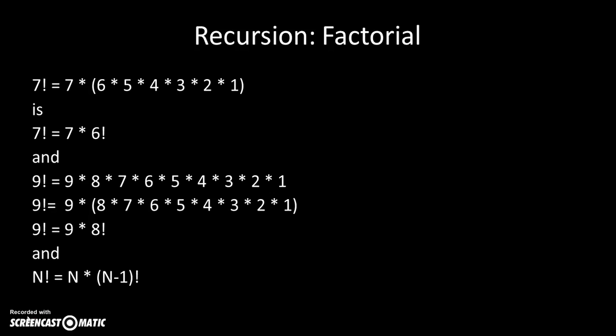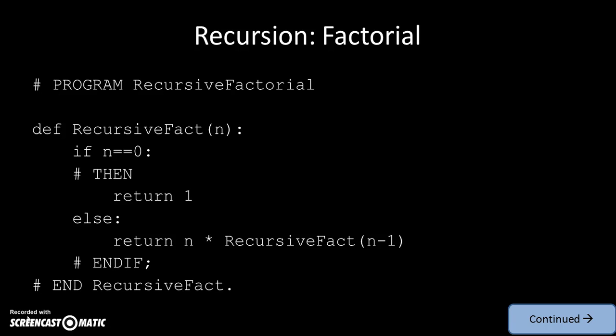Now let's move on and look at recursive programming — or recursion — in Python. We'll recall that we can define n factorial mathematically as n times (n-1) factorial. So our factorial program: we define a method called recursive_fact that takes in a value n. If n is 0, then we return 1; else we return n multiplied by recursive_fact(n - 1). We saw in the pseudocode how that works.